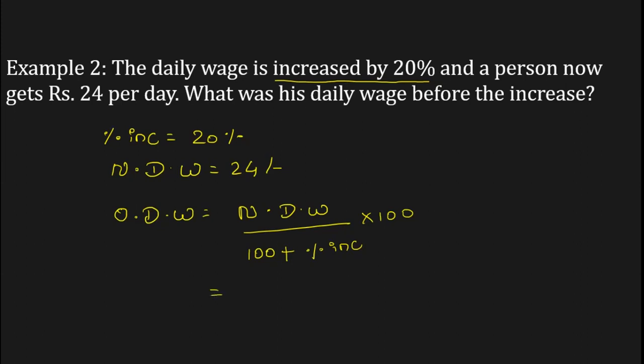New daily wage is equal to 24 upon hundred plus percent increase is 20, into hundred. Now solve this one. We'll be getting 24 upon 100 plus 20 is 120, into 100. Now the zeros get cancelled.